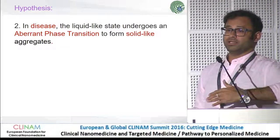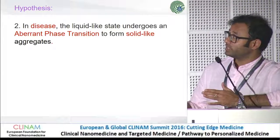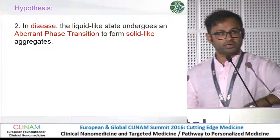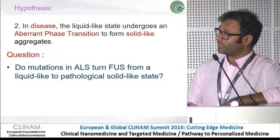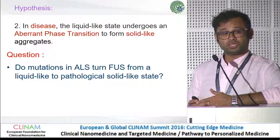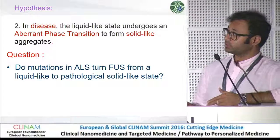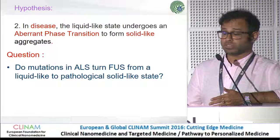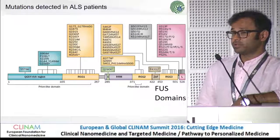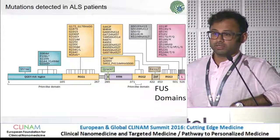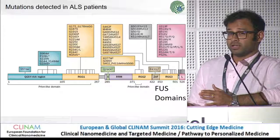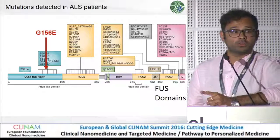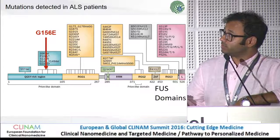That brings me to our second hypothesis: in disease, the liquid-like state undergoes an aberrant phase transition to form a solid-like aggregate. To test this, we asked whether using several mutations that have been linked with ALS patients we could reconstitute the pathological state of FUS. We took the advantage of several ALS-linked mutations and got similar results from many of them, but I'm going to show you the data for just one single mutation.